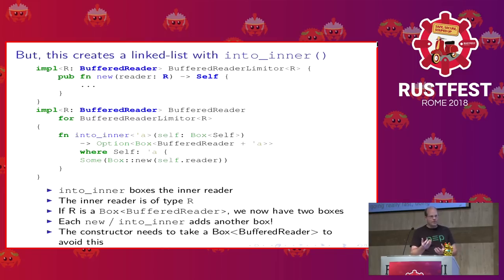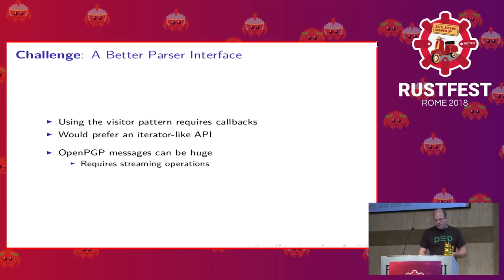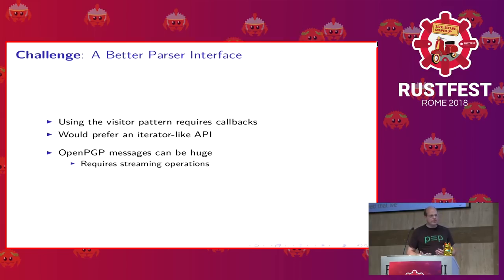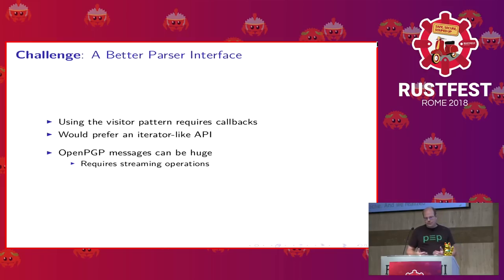We realized we had to change the API. That was an unfortunate consequence of this type erasure and one of the ergonomic aspects of Rust — there are still these edges, even though they offer an amazing amount of convenience. So now we have our buffered reader interface. How are we going to do a better parser interface? The visitor pattern with callbacks is just not what we want — it's not Rust-like. We want an iterator-like API that supports streaming so we can parse big messages.